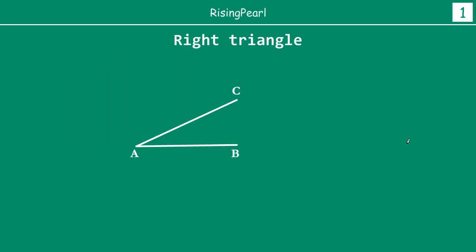Now at point C, we want to draw a perpendicular from point B on line AB, so that our goal is to get a right triangle. This angle is 90 degrees, and this is our point C. So right now, friends, we have a right triangle ABC.